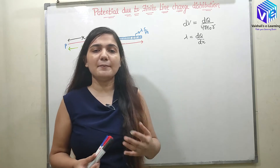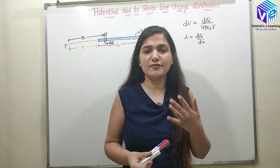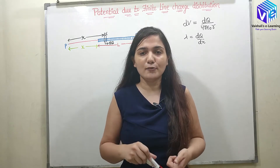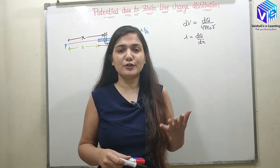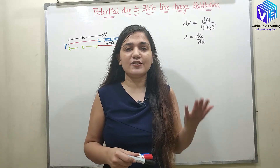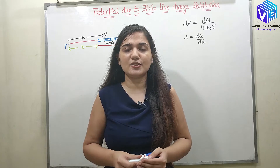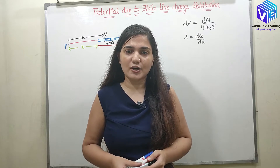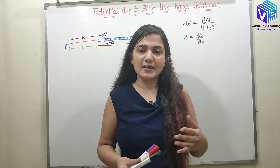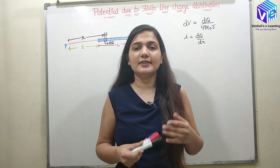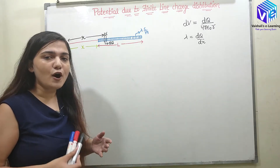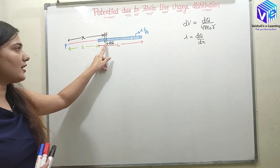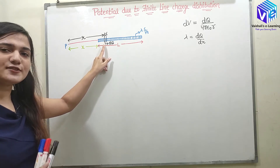I hope you remember what we did in the previous video. We found out the potential due to the infinite charge distribution from the formula of the electric field intensity. I already knew the electric field intensity due to the infinite line charge distribution, then I used the formula V = −∫E·dL. This formula gives me the potential. The next case I found out the small potential due to a small element DL or DR which has the small charge DQ.